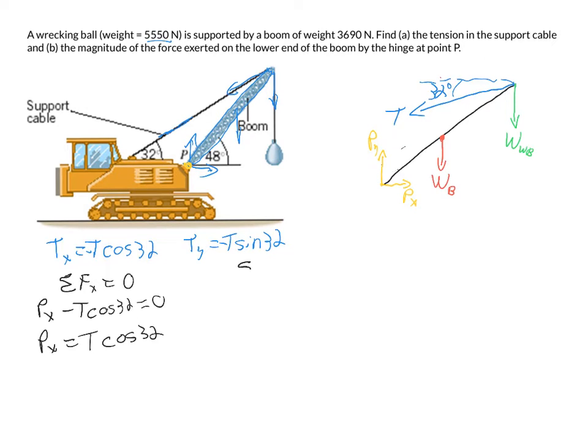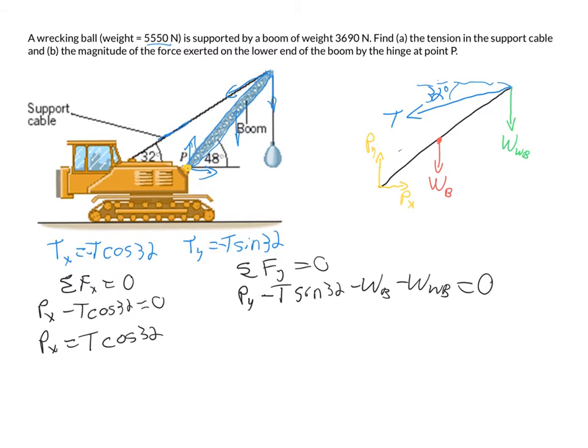We can then move on to sum of the forces in the Y, also equal to zero since we're in torque equilibrium. And in the Y, we're going to have Py in the positive minus T sine 32 minus the weight of the boom minus the weight of the wrecking ball. And again, that equals zero, and we don't know T or Py, and so again, we can't solve yet. We could say, okay, well, if we do get T, Py is going to be equal to the weight of the boom plus the weight of the wrecking ball plus T times the sine of 32, but we still can't solve yet.